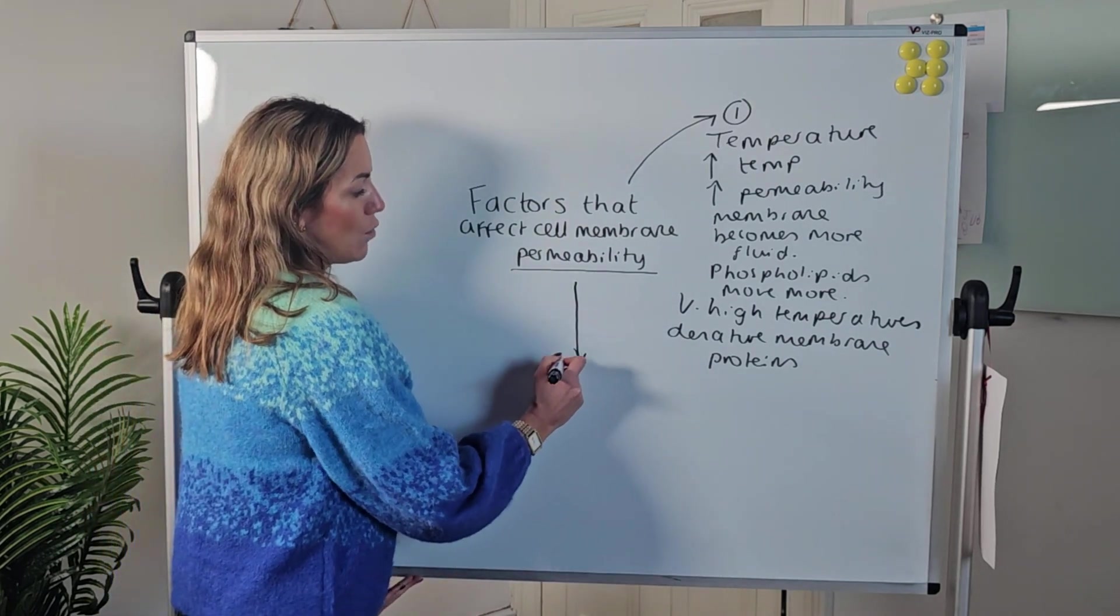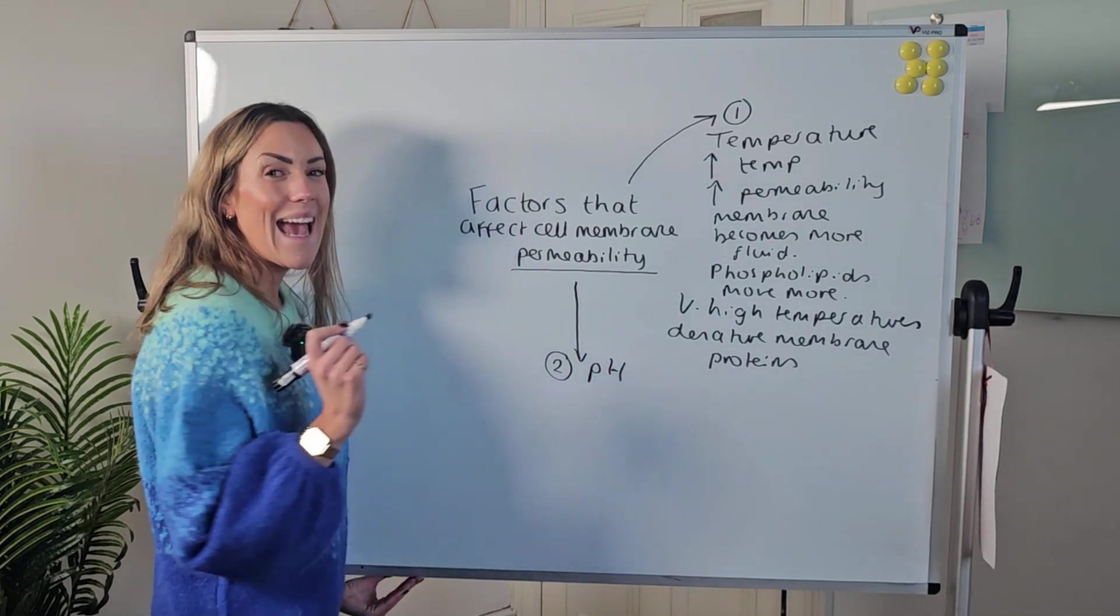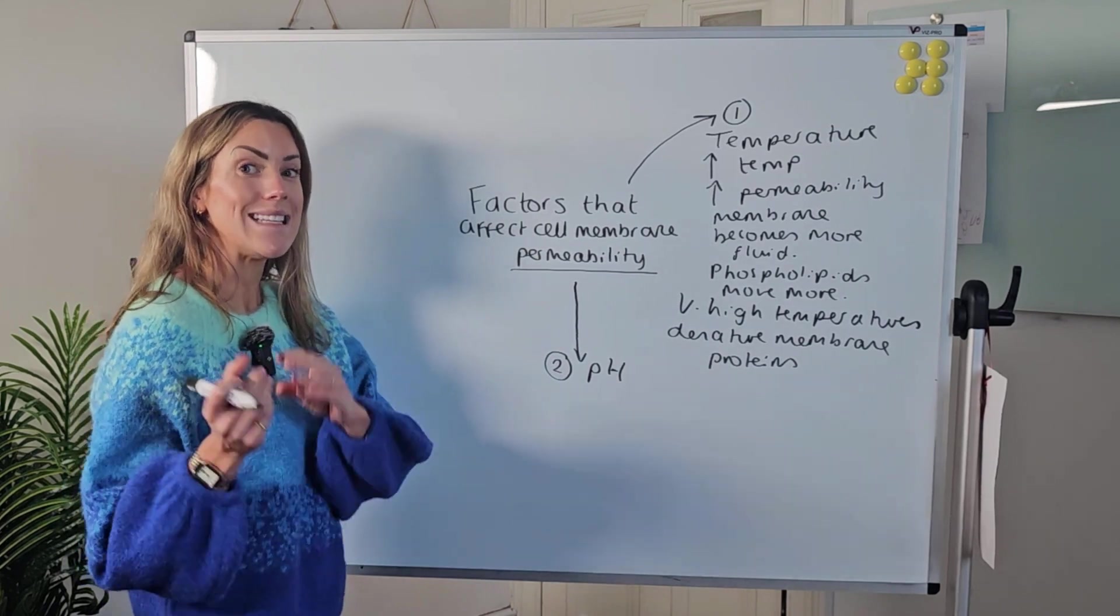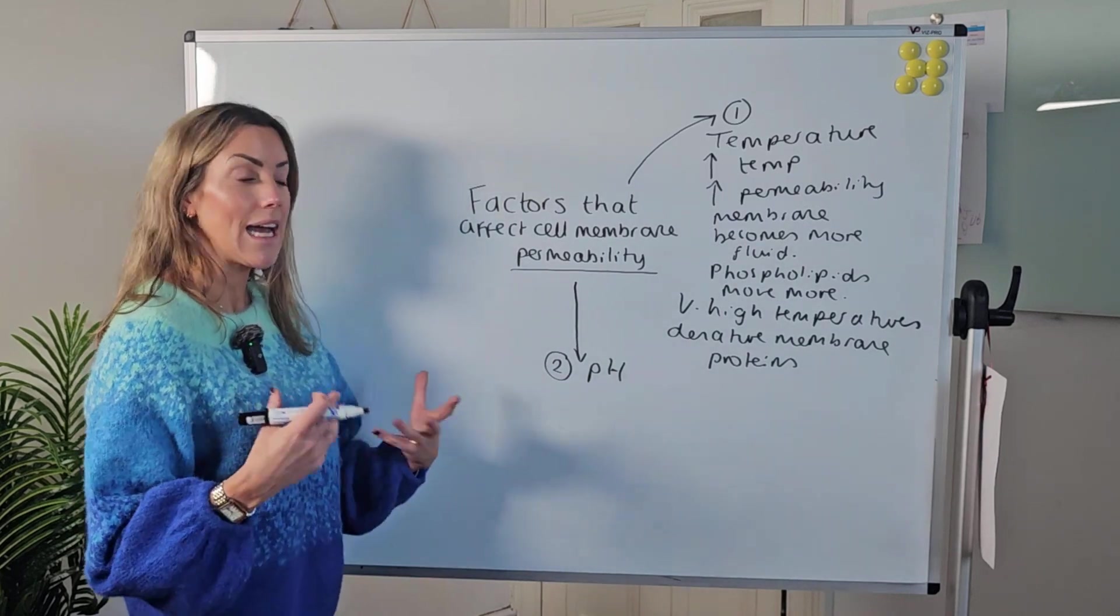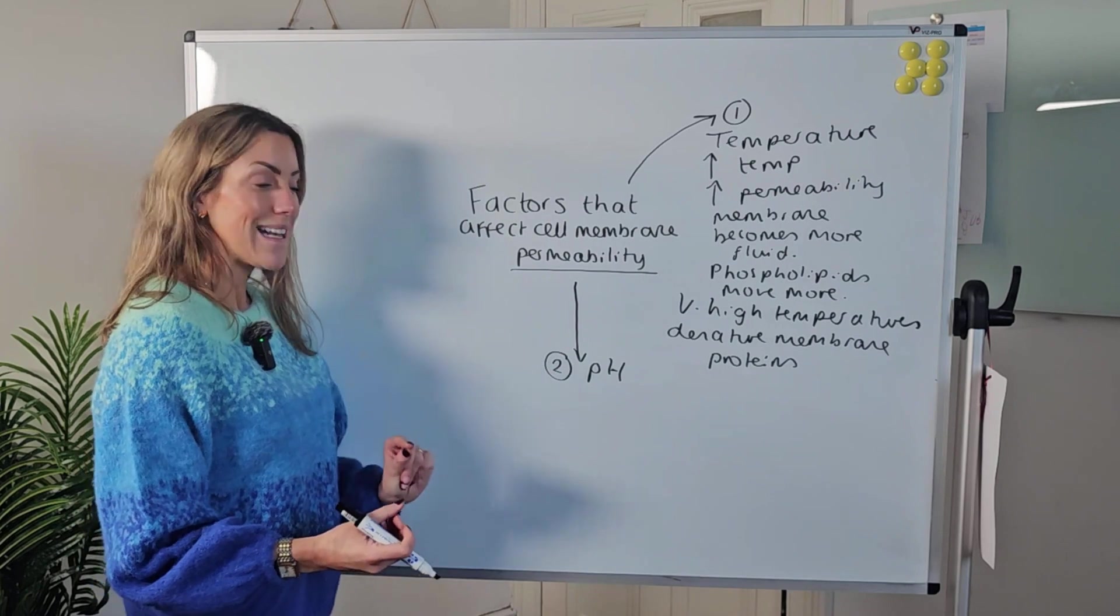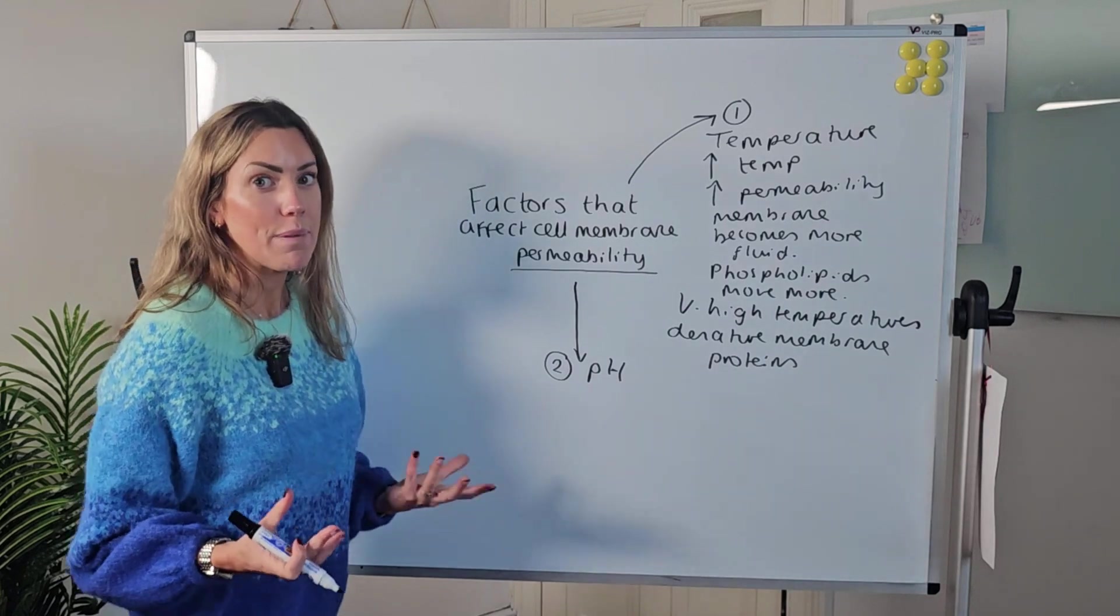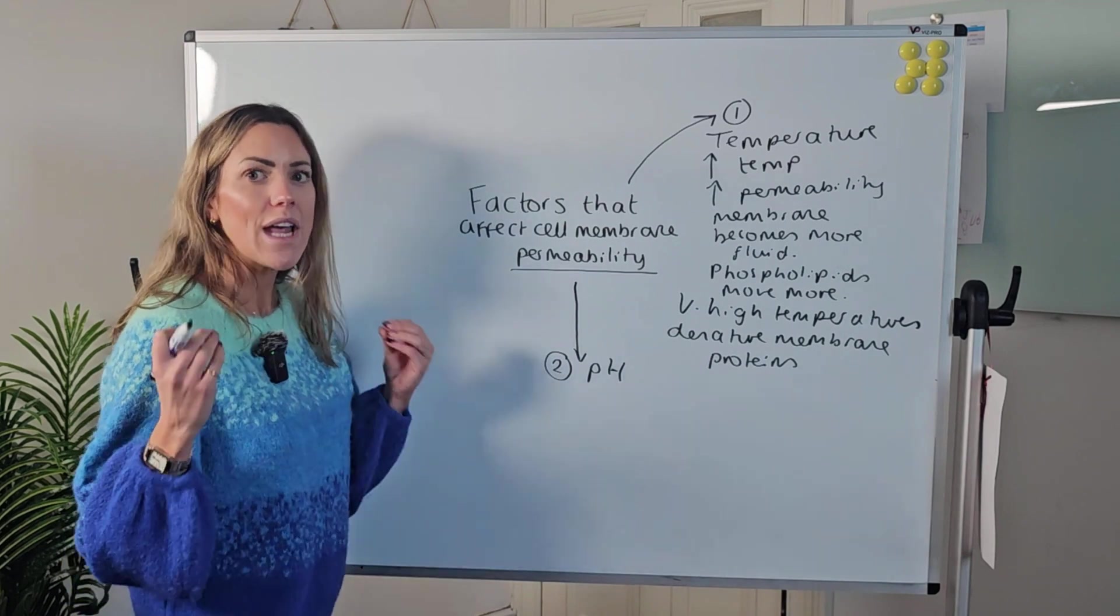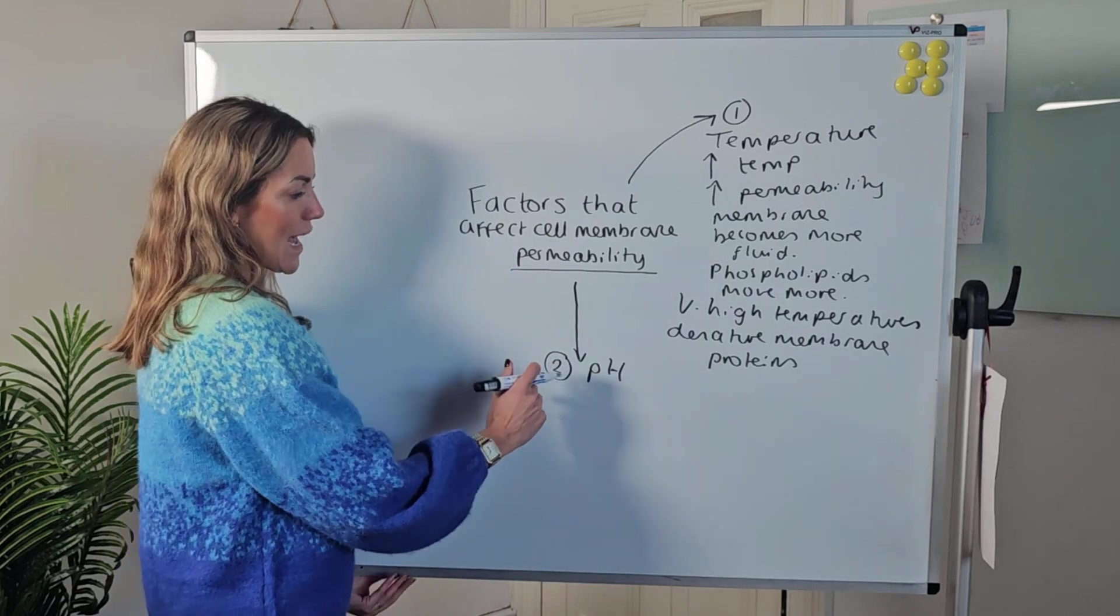For factor number two, let's think about pH. Quite often in the exam, they will put cells into acid. I've seen them put cells into hydrochloric acid. Acids have a very low pH, but any extreme of pH, whether it's very acidic or very alkaline, could have the same effect on the cell surface membrane.